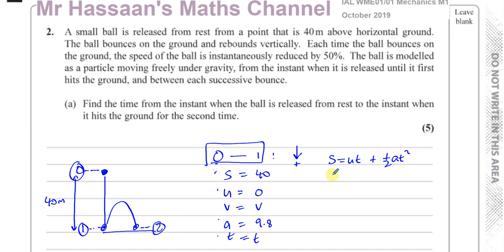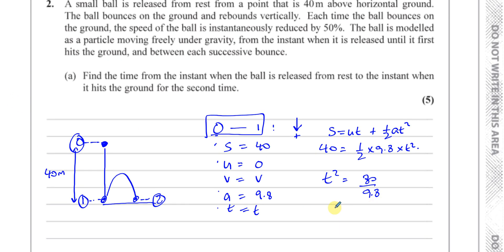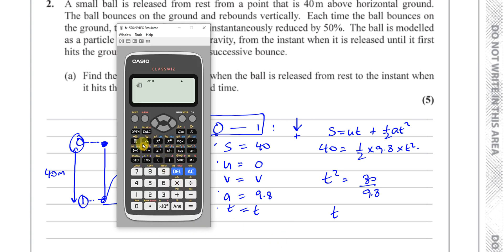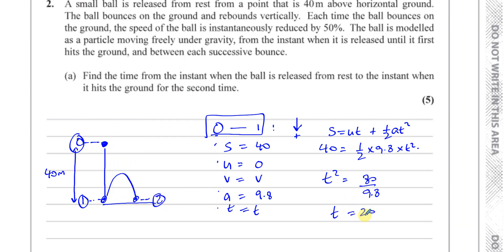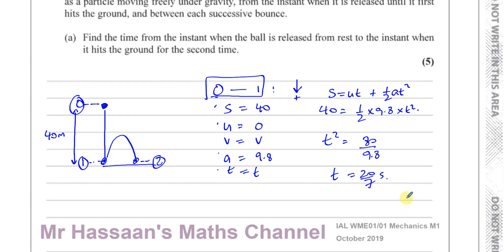Using S = UT + ½AT², we have 40 = 0 + ½ × 9.8 × T². So T² = 80 divided by 9.8, giving us T = √(80/9.8), which equals 20 over 7 seconds. I'll leave it like that for now because it's not our final answer.